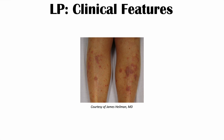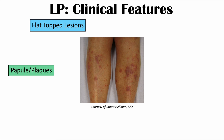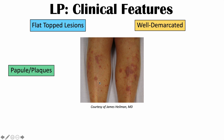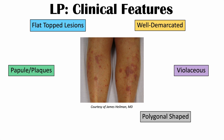The lesions are typically papules or plaques — a papule being a raised skin lesion less than 10 millimeters in diameter, a plaque being greater than 10 millimeters. The top of the lesion is often flat, and the lesions are well demarcated with a clear border. They are violaceous — often purple in coloration, sometimes red — and polygonal in shape. They are pruritic, meaning they are itchy: flat-topped, polygonal, purple, itchy papules or plaques.